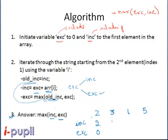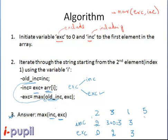For element 3: including it means we have to exclude the previous element, so inc = 3 + 0 = 3. Excluding it means we can include or exclude the previous element, and 2 is greater than 0, so exc = 2. For element 1: inc = 2 + 1 = 3, and exc = 3 because 3 is greater than 2.